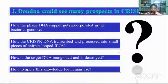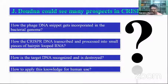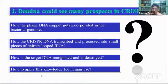At this point, many questions remained unanswered: how the phage DNA snippet gets incorporated into the bacterial genome, how the CRISPR DNA is transcribed and processed into small hairpin-looped RNA pieces, how the target DNA is recognized and destroyed, and most importantly — how to apply this knowledge to human use. This was the biggest question hovering in Doudna's mind.